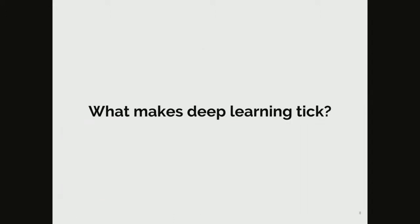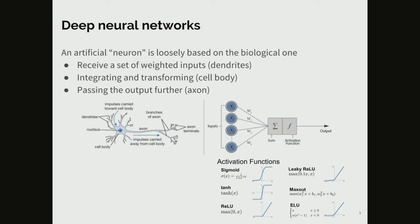So I will try to cover why these things are starting to work so well — what makes deep learning tick. Probably all of you are familiar with artificial neural networks. You have a mathematical structure very loosely based on a real neural cell: a collection of inputs weighted by connection weights, a summation, and a non-linear transformation. This goes on into other nodes in your network.